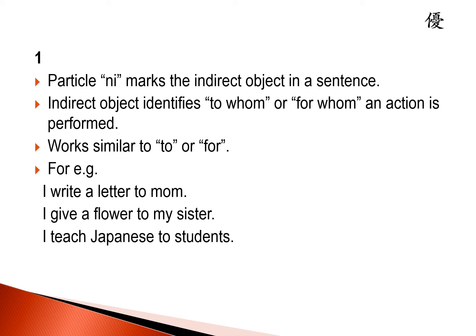Similarly, I give a flower to my sister. What do you give? Flower. So flower is the direct object. And to whom do you give it? You give it to your sister, so sister will be the indirect object. Another example: I teach Japanese to students. Here Japanese is the direct object and student will be the indirect object.